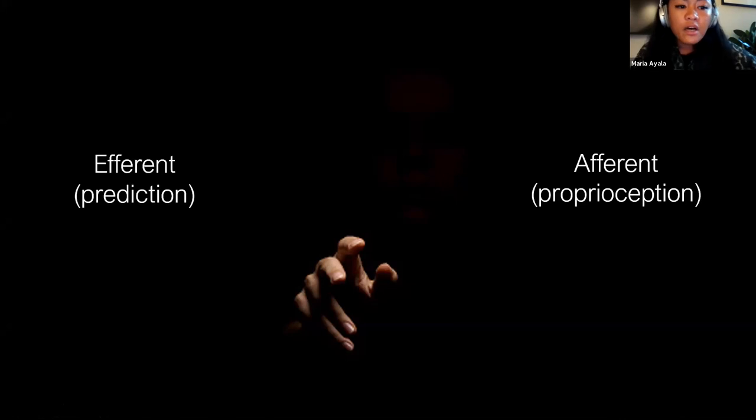So our central nervous system can rely on at least two sources of information in order to localize the limb position in the absence of vision. First, we have our proprioceptive afferents from receptors in our limbs, and we also have an efferent copy of the motor command used by the cerebellum to generate a prediction of sensory consequences.